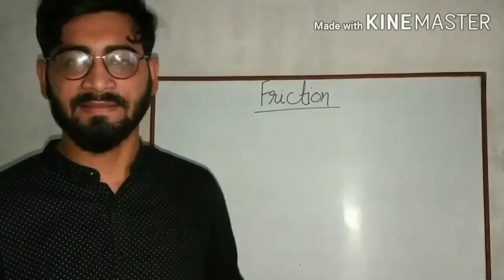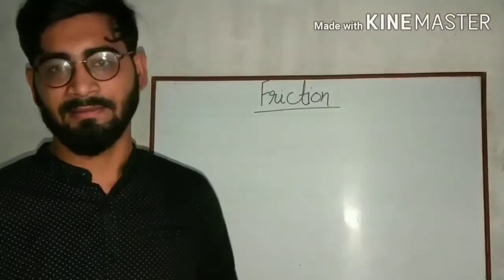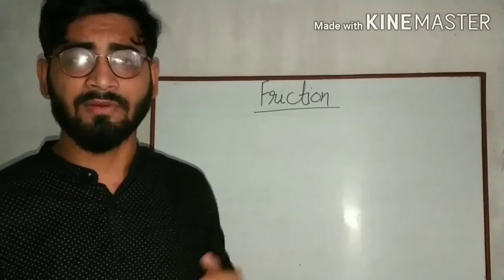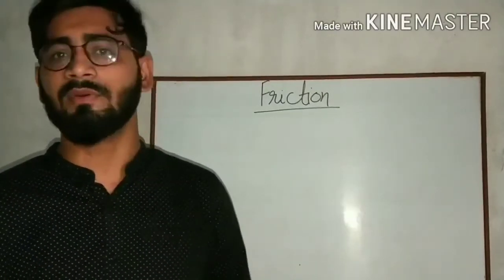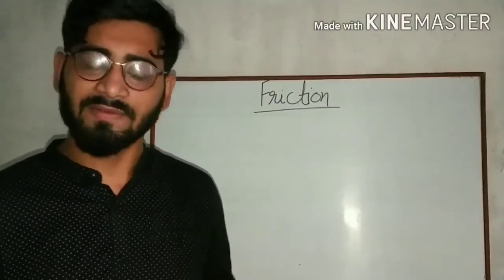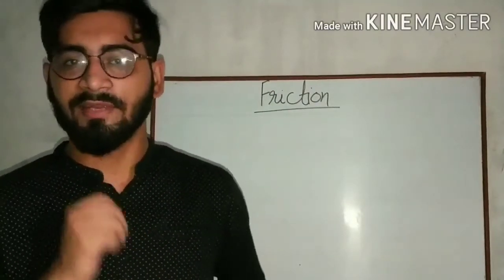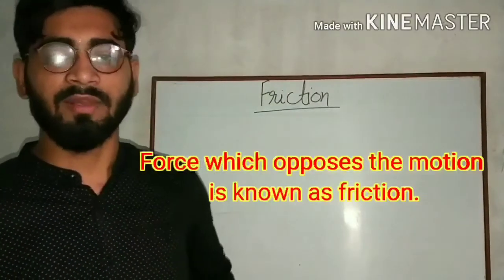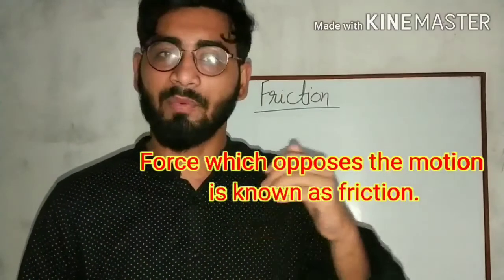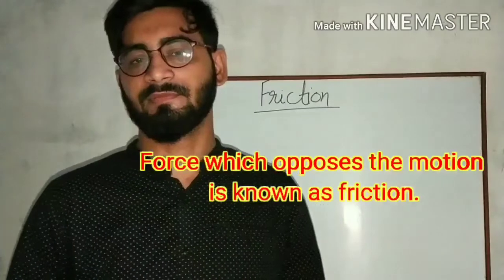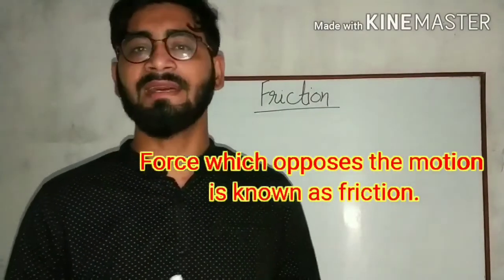In both cases — in the case of the ball and in the case of the cycle — there is one force which is trying to stop the motion. That is Friction. So, what is Friction? Friction is a force which opposes the motion.